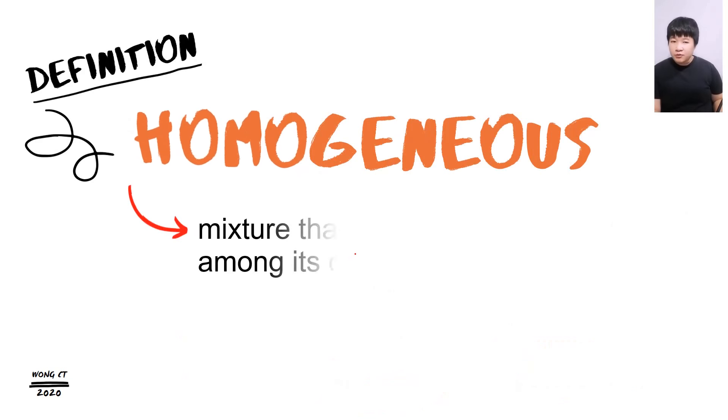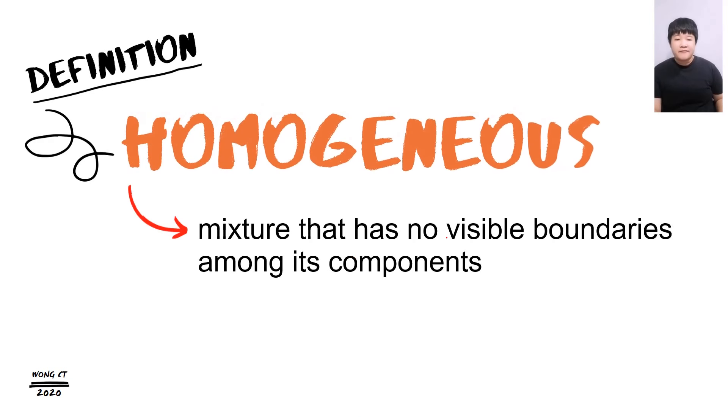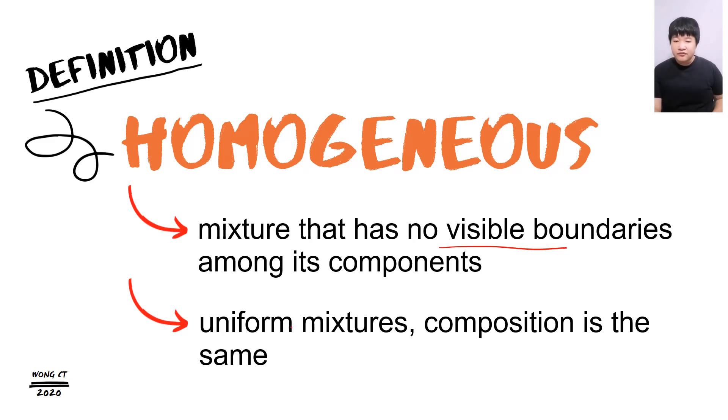What is homogeneous? Homogeneous is a mixture that have no visible boundary among its component. A homogeneous mixture must have a uniform mixture. Composition is the same. A very simple example that I can give to you is the gases in our surrounding. We have oxygen, we have nitrogen gas, we have carbon dioxide gas, and so on. A lot more. But all of them are in the form of gases. Therefore, they have no visible boundary among its component.